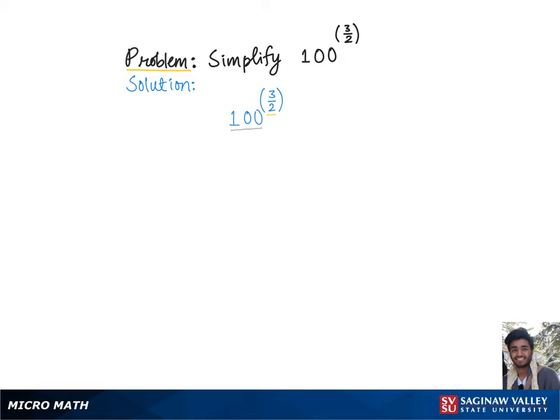We find that number by guess and check method. So 100 is 10 squared, so our problem becomes 10 squared raised to the power of 3 halves.